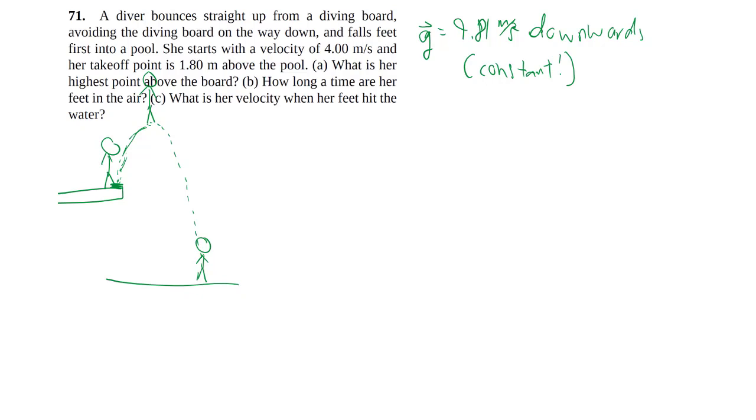If you read the rest of the question, we're asking about what is the highest point, where's her highest point above the board, but also there's something about when she hits the water. So we're actually interested in two different points in the problem. The label of initial and final gets a little hairy because it's hard to tell what's the final. So I'm going to label this as point zero, this as point one, and this as point two, just so that I don't have my final velocity referring to two different things.